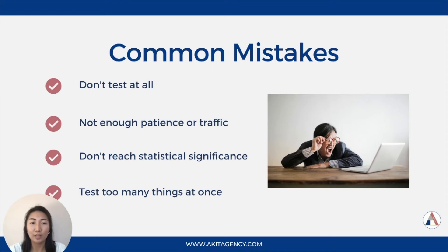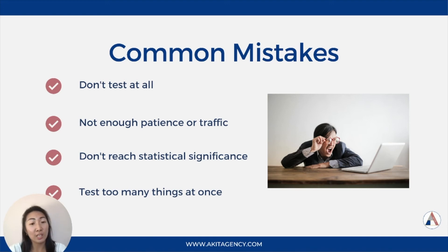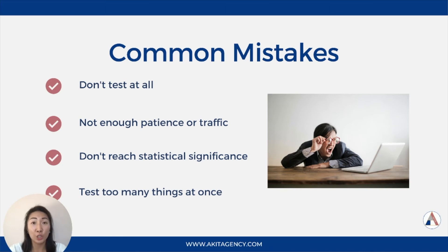Another mistake is they don't reach statistical significance before they conclude the test. Statistical significance is the likelihood that the difference in whatever you're measuring — usually conversion rate — between a variable and the baseline is not due to random chance. We aim for a significance level of 95%. This is our risk tolerance and our confidence level. On the flip side, that means there is a 5% chance we can be wrong and the results were due to chance, which is why a 95% confidence level is good enough.